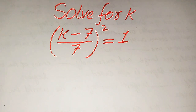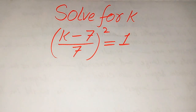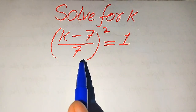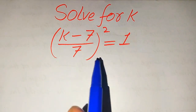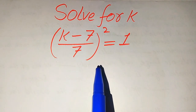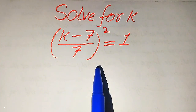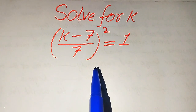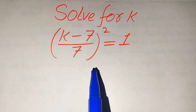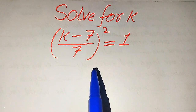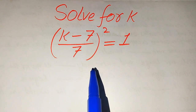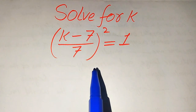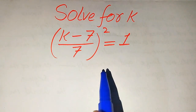Hello everyone. How to solve this problem: for the values of k, if we have (k minus 7) divided by 7, whole square, equals 1. We solve this problem using two methods. If you have any other method in mind, please don't hesitate to write it in the comment section.